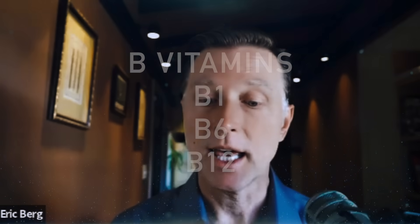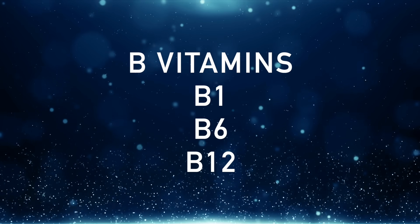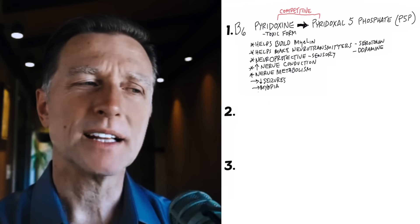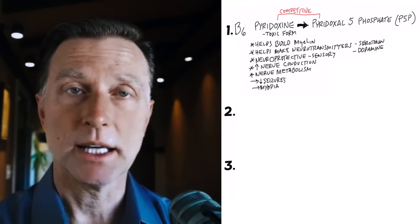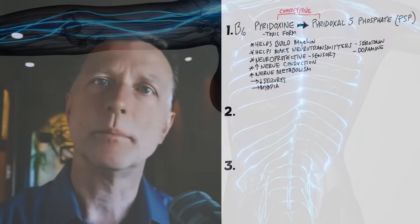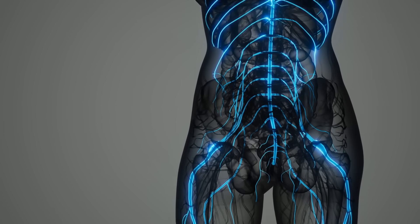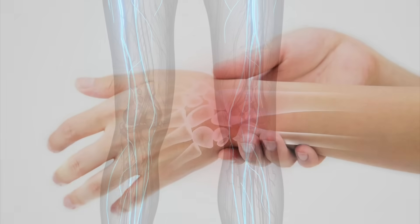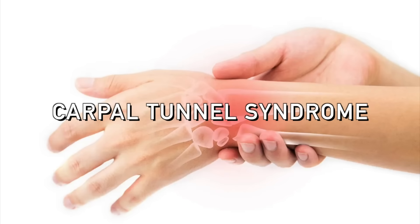So today I'm going to discuss three common nutritional deficiencies. And they involve the B vitamins, B1, B6, and B12. So we're going to discuss a little bit on how to differentiate if your problem is more of a B6 deficiency or a B12 deficiency or a B1. But these three vitamins are intimately involved in the nervous system and especially sciatic nerve and carpal tunnel syndrome, which is pain or numbness in your wrist.